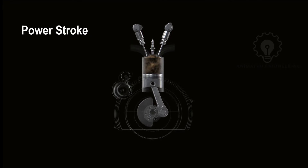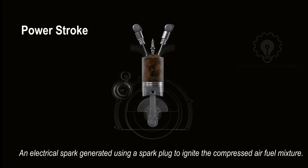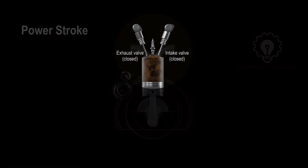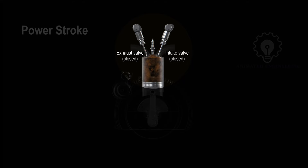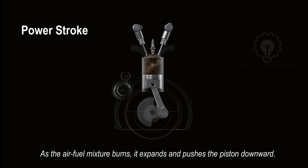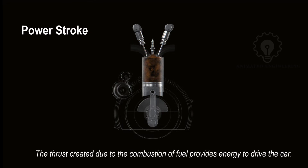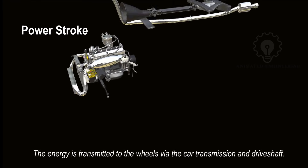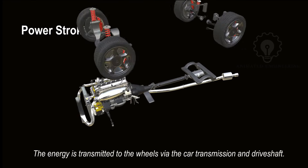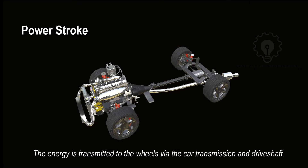Power stroke: an electrical spark generated using a spark plug is used to ignite the compressed air-fuel mixture. The intake and exhaust valves remain closed in the power stroke. As the air-fuel mixture burns, it expands and pushes the piston downward. The thrust created due to the combustion of fuel provides energy to drive the car. The energy is transmitted to the wheels via the car transmission and driveshaft.